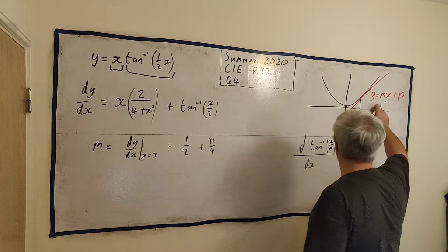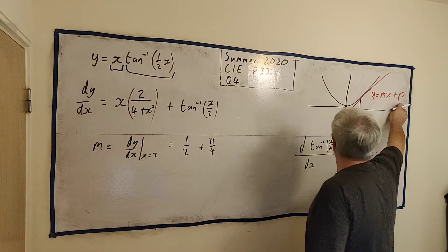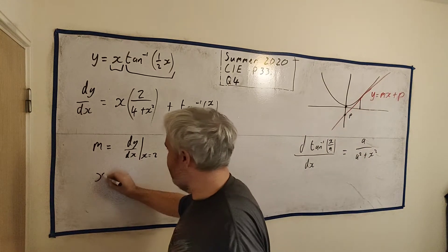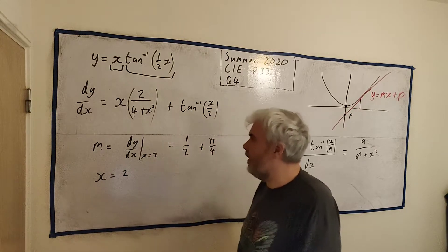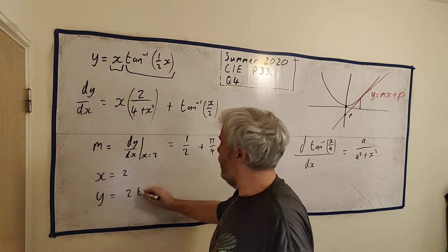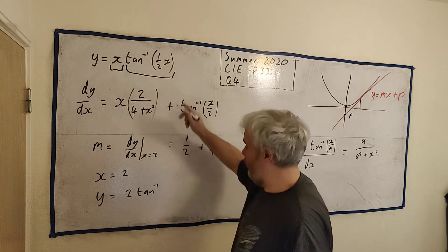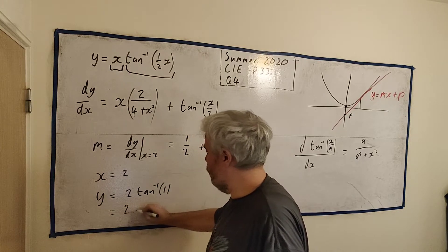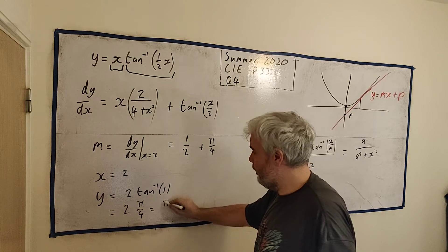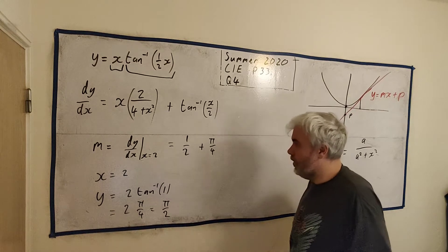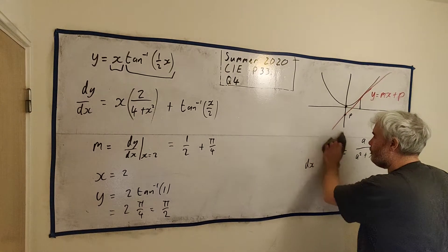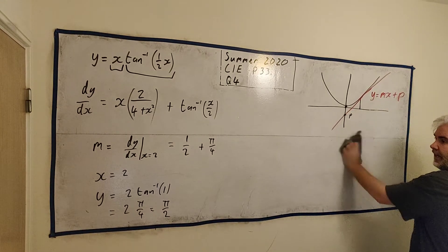What do we need here? We need to find P. So I need to know what m is, I need to know what x is, I need to know what y is. Okay, m is that. x is equal to 2, they tell us that. So what's y? Here's y up here. y is equal to 2 times the inverse tangent of 1 again. This is 2 times pi over 4, which is equal to pi over 2. So we have everything we need. Let me make a little bit of room here.